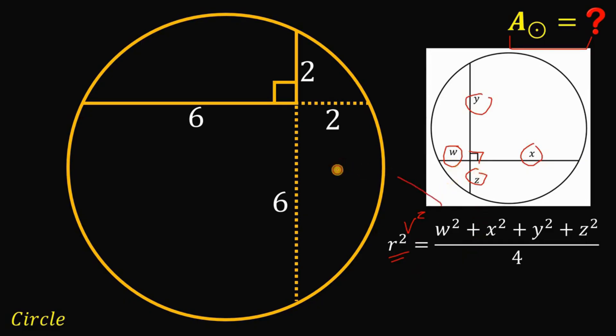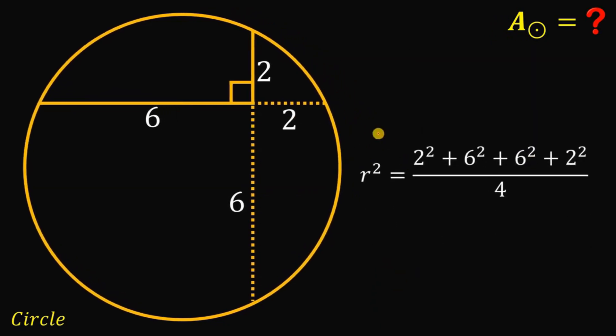plus x squared plus y squared plus z squared divided by 4. Now, using this theorem to our given figure, we can say that r squared must be equal to 2 squared plus 6 squared plus 2 squared plus 6 squared and we can now focus on this equation to solve for the value of r squared.